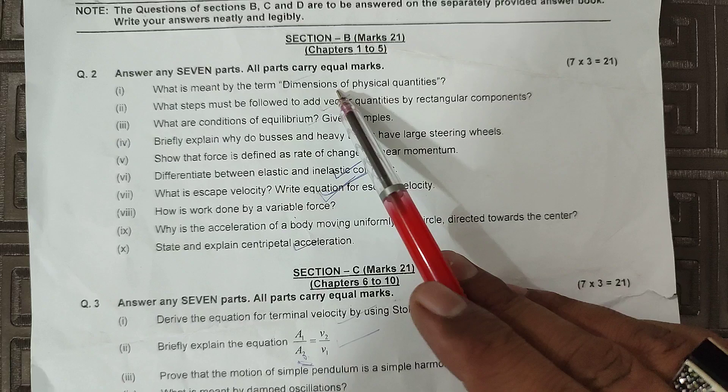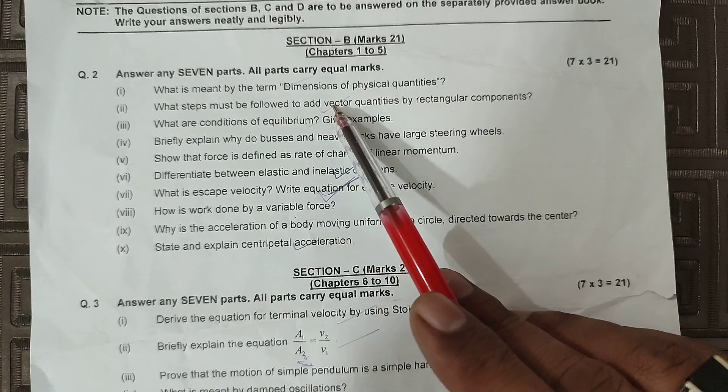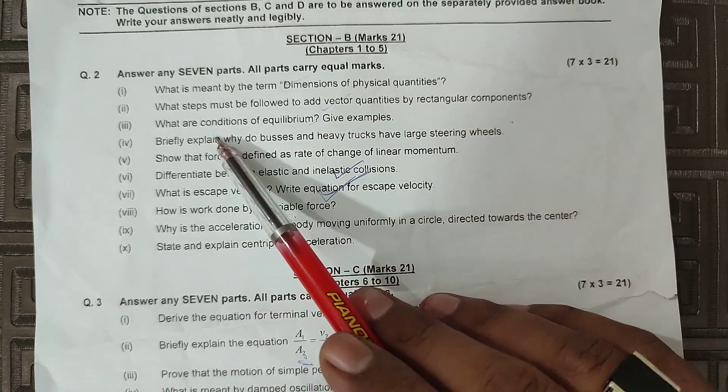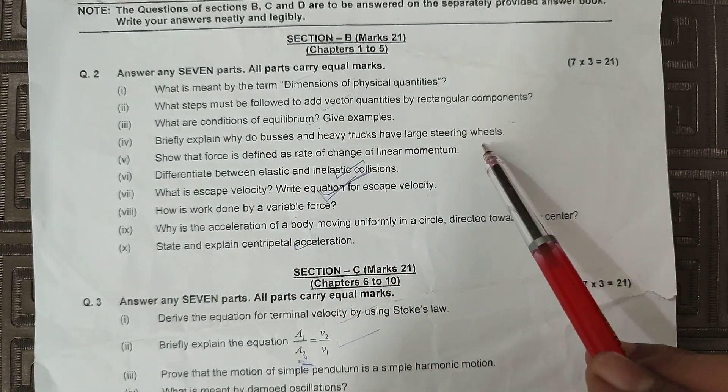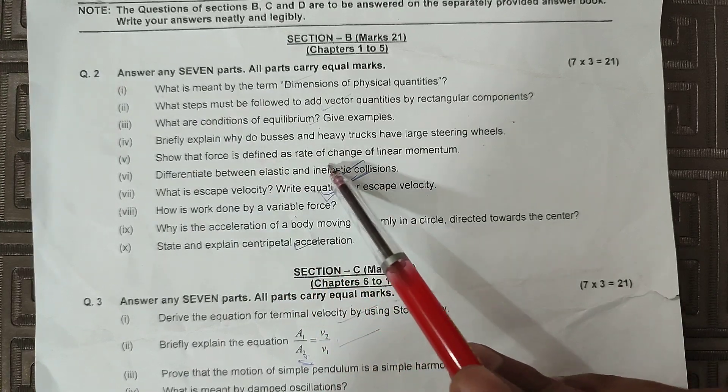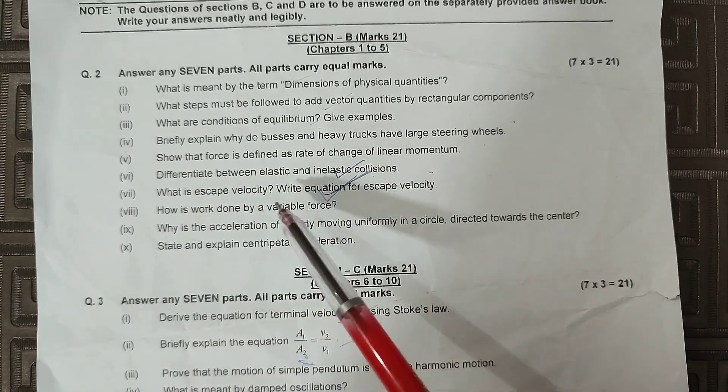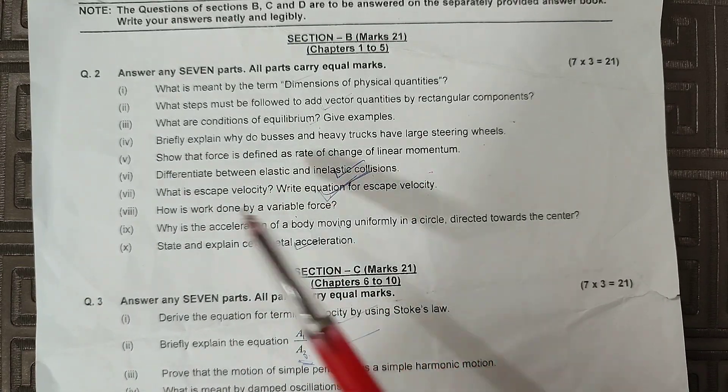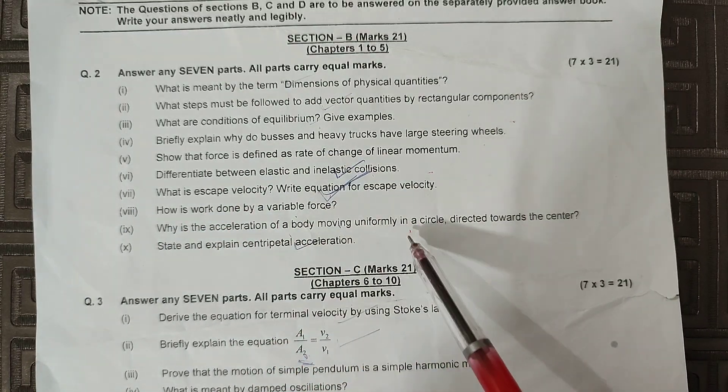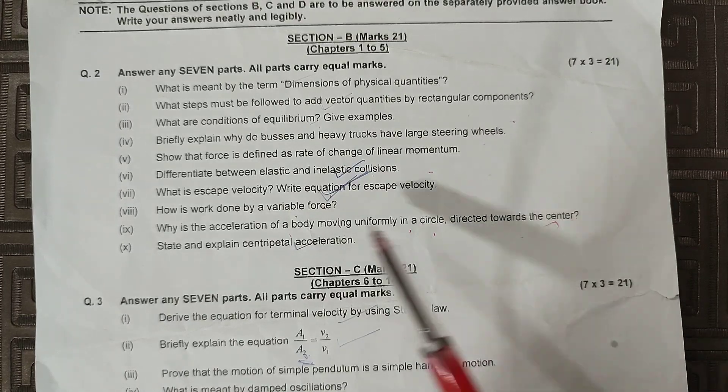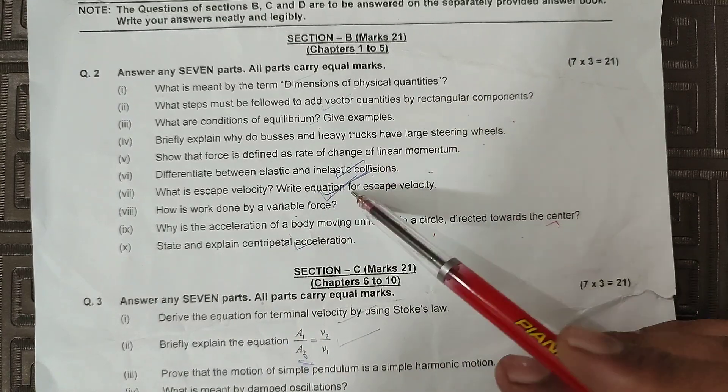Okay, start: What is meant by the term dimensions of physical quantities? What steps must be followed to add vector quantities by rectangular components? What are conditions of equilibrium? Give examples. Briefly explain why buses and heavy trucks have large steering wheels. Show that force is defined as the rate of change of momentum. Differentiate between elastic and inelastic collisions. What is escape velocity? Write down equations for escape velocity. How is work done by a variable force? Why is the acceleration of a body moving uniformly in a circle directed towards the center? State and explain centripetal acceleration. Yeh aapke paas kuih 10 questions hai, jo short mein important hai.